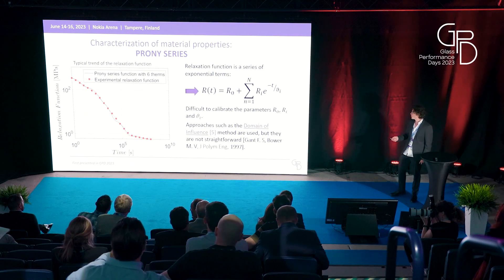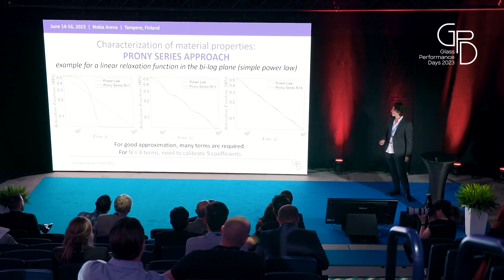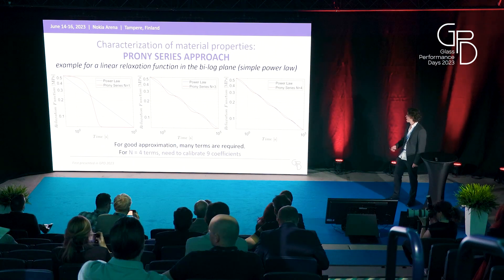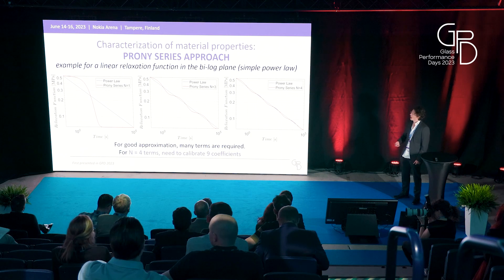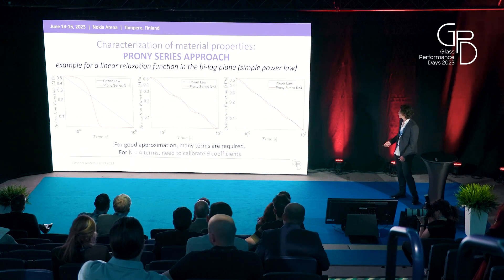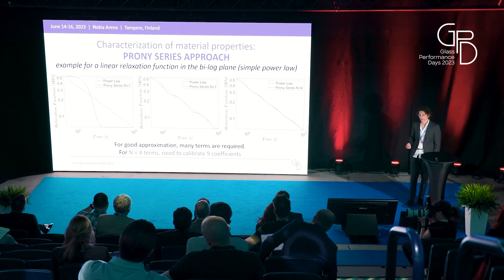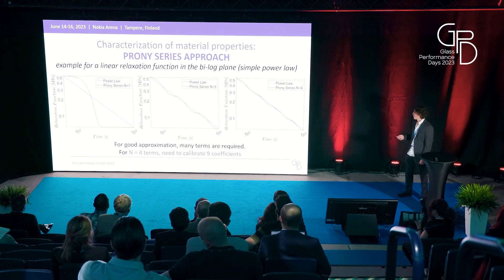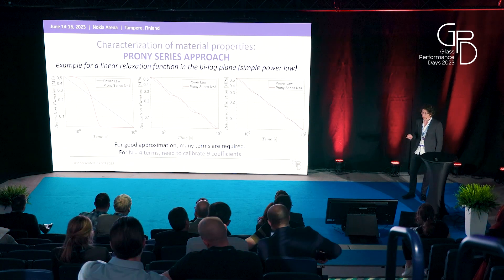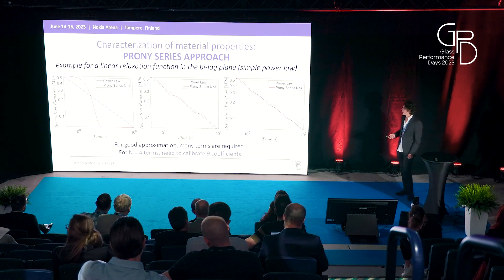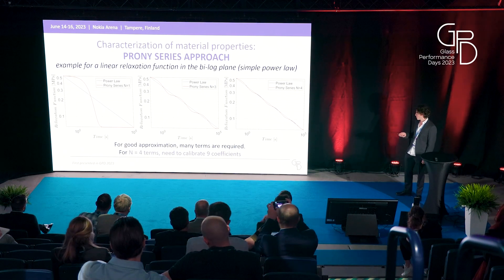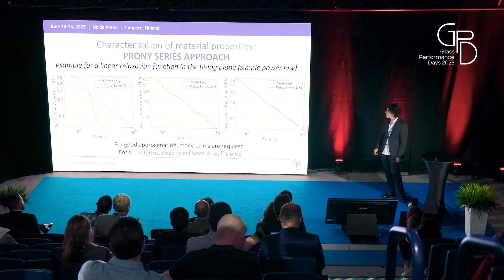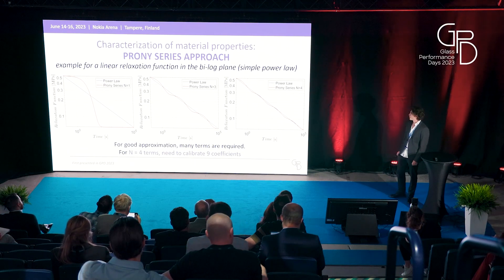In this study, the domain of influence method has been used for calibration. As an example, the blue line shows a power law — which appears as a straight line in a log-log graph. A power law is chosen as the reference function because, from the experiments of Nutting, the experimental relaxation data are well fitted by power laws. This illustrates how many terms are needed to interpret this function with the Prony series.